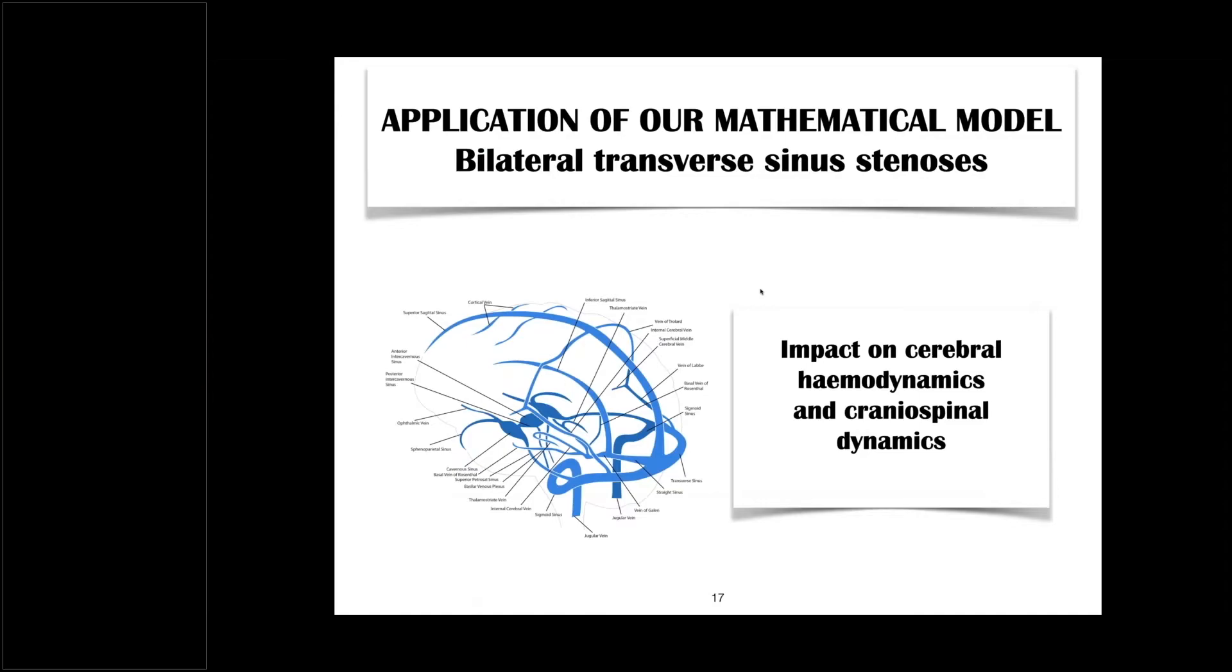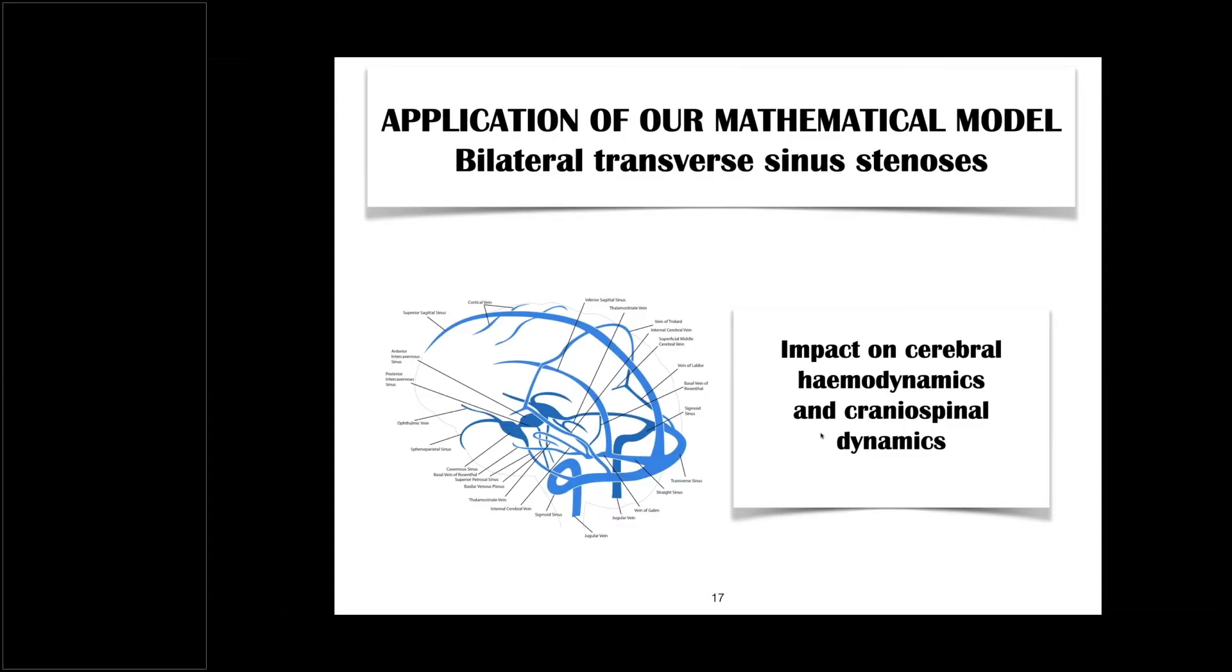Now, having a degree of confidence that the mathematical model does represent reality to some approximation, we are going to use the mathematical model to study the hemodynamics of bilateral transverse sinus stenosis here. So, we are going to assume stenosis in both transverse sinuses here. And we are going to see what the consequences are for the fluid dynamics of the entire cranial spinal cavity. The full body, as a matter of fact, but, of course, the consequences will be seen fundamentally in the cranial spinal part.